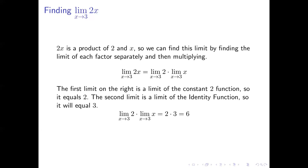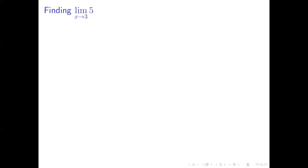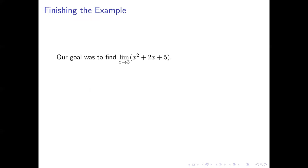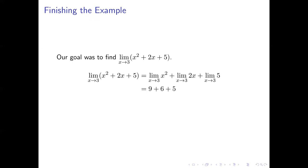The third limit, limit as x approaches 3 of 5, is simply 5 by the constant rule. Putting it all together: the limit as x approaches 3 of x squared plus 2x plus 5 equals 9 plus 6 plus 5, which equals 20. That is the value of the limit of our three-term polynomial function.